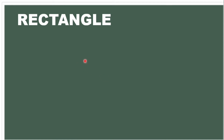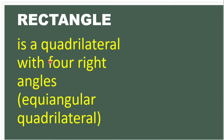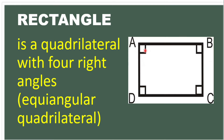Next we have the rectangle. A rectangle is a quadrilateral with four right angles. It is also considered an equiangular quadrilateral because all interior angles are equal. So in this example, angle A, angle B, angle C, and angle D are all right angles — each equal to 90 degrees.